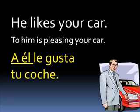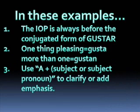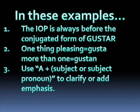There are three things I want you to observe from those examples. Number one: the indirect object pronoun — I call it the IOP — is always before the conjugated form of the Spanish verb gustar. Number two: when it is only one thing that is pleasing, we conjugate the verb as gusta. But when there is more than one item that is pleasing, we conjugate the verb as gustan. Singular: gusta. Plural: gustan.